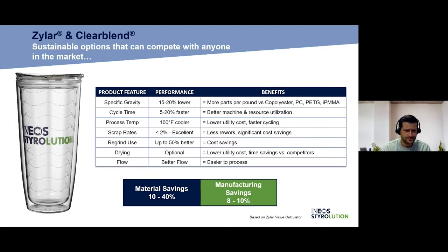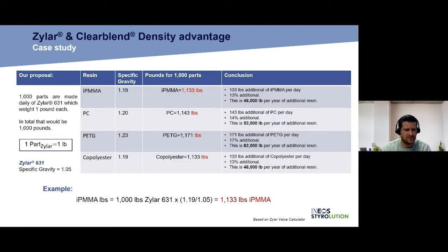In this hypothetical case study, we're going to say a manufacturer is making a thousand parts a day. Let's assume those thousand parts are made of Xylar 631 and each one of those parts weighs one pound with Xylar 631. So you're in essence producing 1000 pounds a day of Xylar 631. Now the specific gravity of Xylar 631 is 1.05. You can see for some of the other resins that you could use in similar applications, such as impact PMMA, polycarbonate, copolyester, PETG, your specific gravity is around 1.2. So if we made those same parts out of polycarbonate with a specific gravity of 1.2, you'd be looking at 1143 pounds.